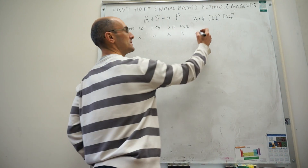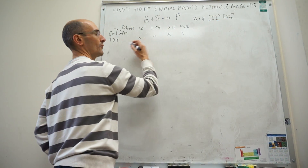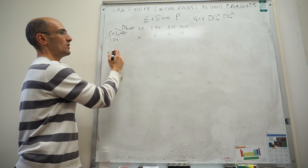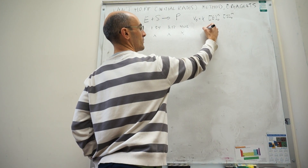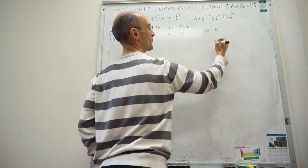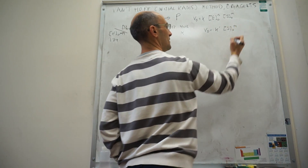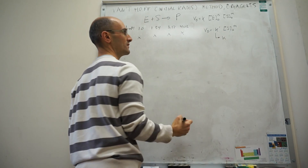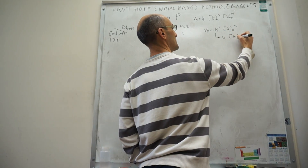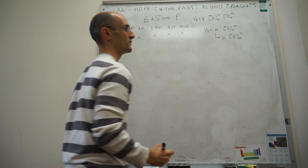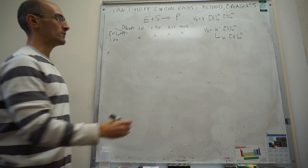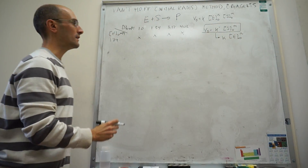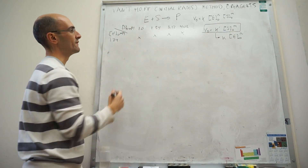Under those conditions, the enzyme term is constant, so you can write the expression simply as K prime times the concentration of substrate to the power M. K prime is equal to the rate constant times the initial concentration of enzyme raised to the power of the order N. Using this expression, we can determine both M and K prime if we turn this into a linear plot — and that is what the Van't Hoff method really is.